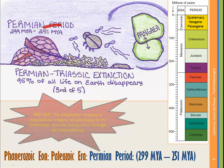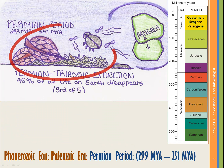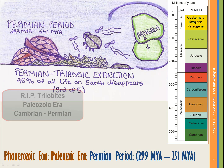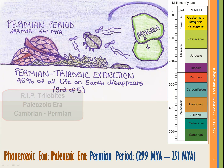We also see cone-bearing gymnosperms, mosses, beetles, and flies appear in the Permian. This period ends with the Permian-Triassic extinction event, marking the transition from the Paleozoic Era to the Mesozoic Era — the third of Earth's five major extinction events, at about 251 million years ago. At this time, 95% of all life on Earth is estimated to have disappeared, and this is when trilobites finally die out after spanning the entire Paleozoic from the Cambrian.